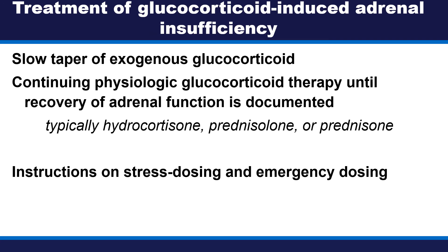The treatment of glucocorticoid-induced adrenal insufficiency includes a slow taper of exogenous glucocorticoid, as long as supraphysiological doses are no longer required for the inflammatory disorder. Exogenous glucocorticoids should not be completely tapered off, and physiological glucocorticoid therapy should be continued until recovery of adrenal function is fully documented. Typically, hydrocortisone, prednisolone, or prednisone are used until adrenal function improves.